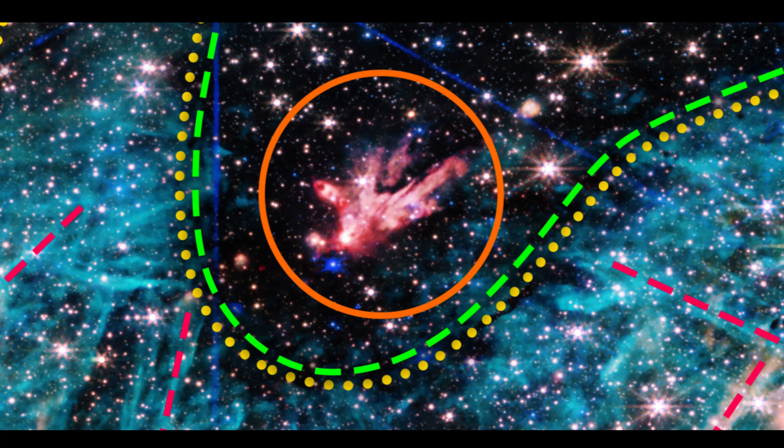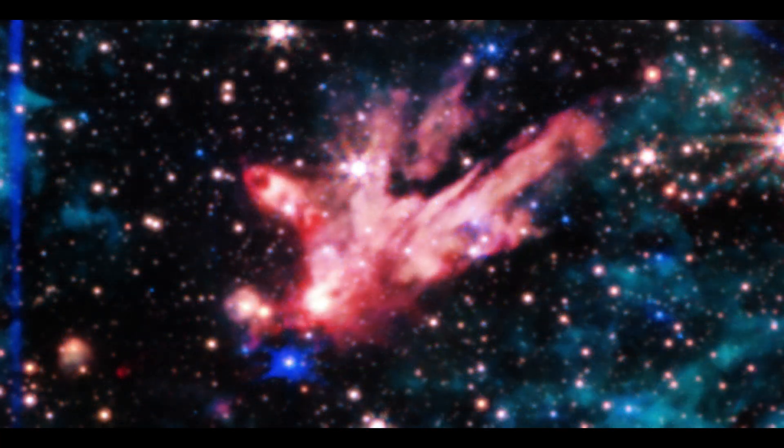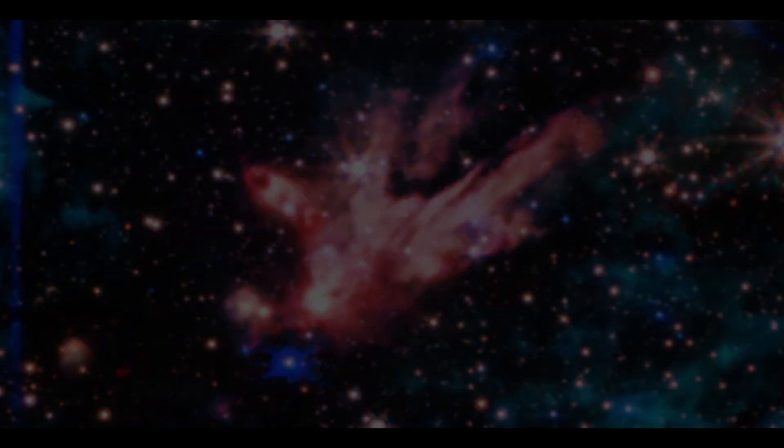The image also reveals large-scale emission from ionized hydrogen in cyan, surrounding the lower side of the dark cloud. Typically, such emission is associated with energetic photons from young massive stars. The extensive region captured by Webb presents a surprising aspect that requires further investigation. Needle-like structures in the ionized hydrogen, oriented chaotically, are another feature raising questions and warranting further examination.